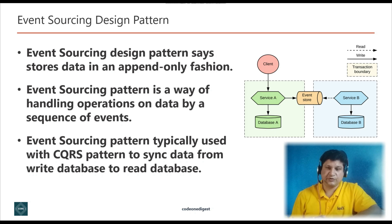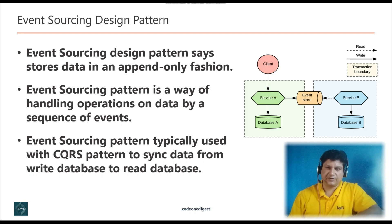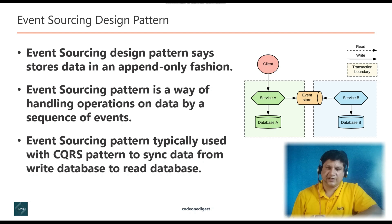Event sourcing pattern is typically used with the CQRS pattern to sync the data from a write database to a read database. Event sourcing with CQRS decouples read and write workloads and optimizes for performance, scalability, and security. Data in an event sourcing DB is stored as a series of events. Instead of updating the status of a data record, it appends each change to a sequential list of events. Event sourcing works effectively with CQRS because data can be reproduced for a specific event even if the CQRS stores have different schemas.